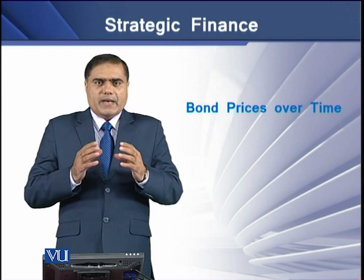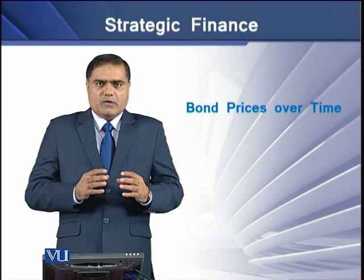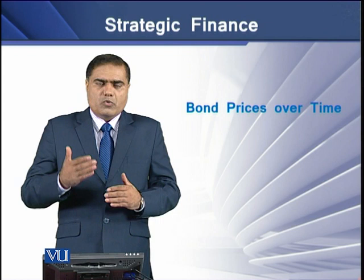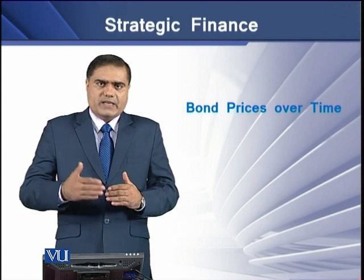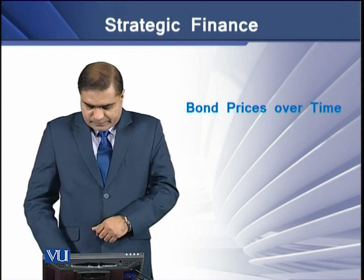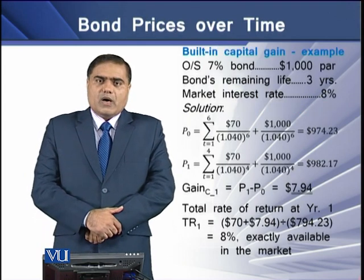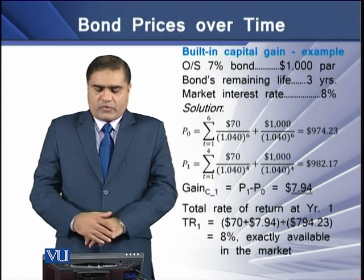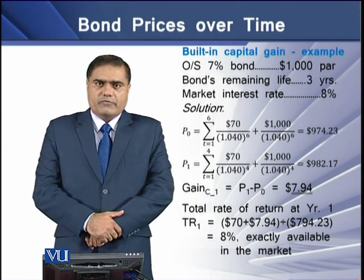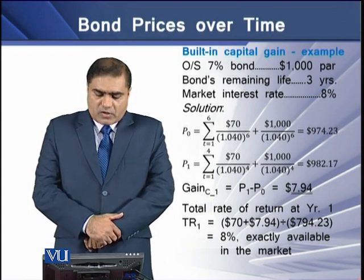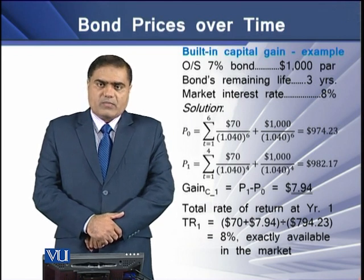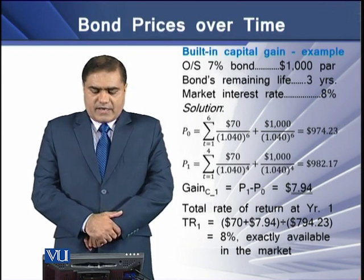Selling a bond at a discount provides the bond holder an opportunity for built-in capital gain. To illustrate how to compute this built-in capital gain, consider an example: an outstanding 7% bond with a $1,000 par value, a remaining life of three years, and a market interest rate of 8%.